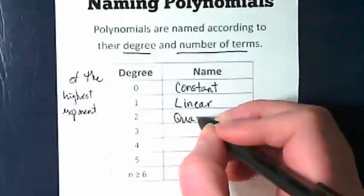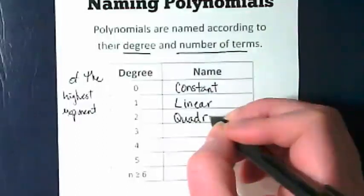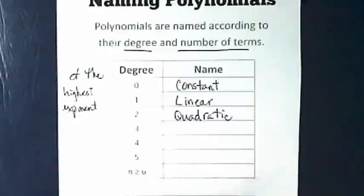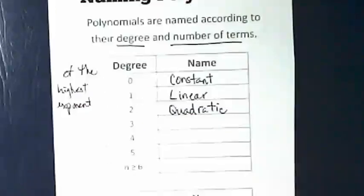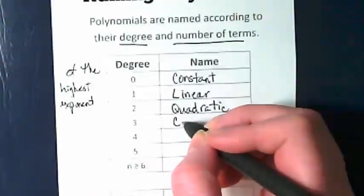If the highest exponent is 2, we call it quadratic. Three is cubic.